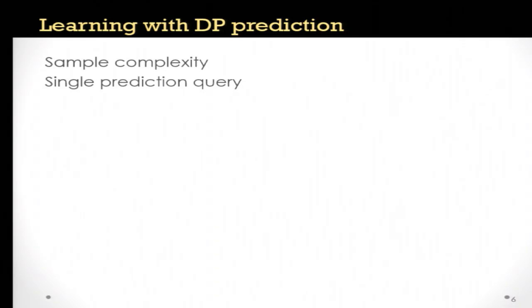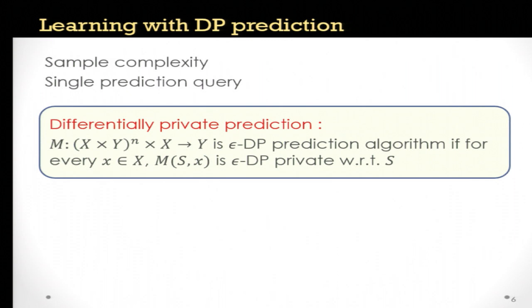Since we're only looking at a single prediction query, we can restrict our attention to the following definition, which we call differentially private prediction. We say that an algorithm which gets as input a data set and a single query point and outputs a label has epsilon differentially private prediction if for every query point x and every data set, this algorithm is epsilon differentially private with respect to the data set.